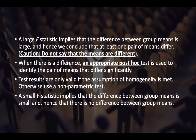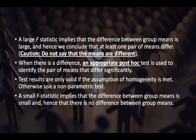In ANOVA our main concern is the F statistic. A large F implies that at least one pair of means will differ significantly — not that all means differ, but at least one pair. When there is a large F statistic and a small p-value, we need to conduct a post hoc test to identify which specific pair of means differs. Results are valid if the assumption of homogeneity of variance is met; otherwise, we resort to a non-parametric test. A small F statistic implies no significant differences between group means.